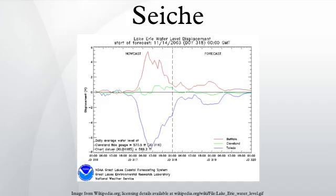Underwater waves: although the bulk of the technical literature addresses surface seiches, which are readily observed, seiches are also observed beneath the lake surface acting along the thermocline in constrained bodies of water. In analogy with the Merian formula, the expected period of the internal wave can be expressed using variables where T is the natural period, L is the length of the water body, along with the average thicknesses of the two layers separated by stratification, the densities of those two layers, and g the acceleration of gravity.